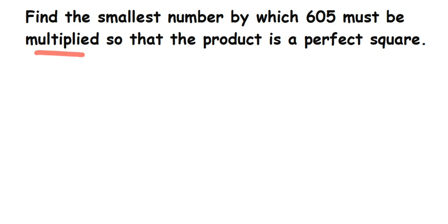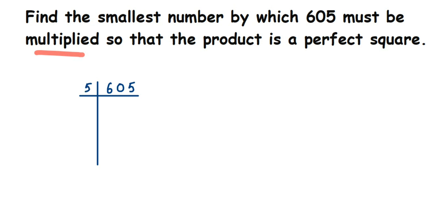So here we're going to do a prime factorization of 605. Now 605 is an odd number, so I won't check with 2 because 2 is an even number. 605 also doesn't go into the 3 times table, so I'm going to jump directly to 5. Remember, in prime factorization you take only prime numbers.